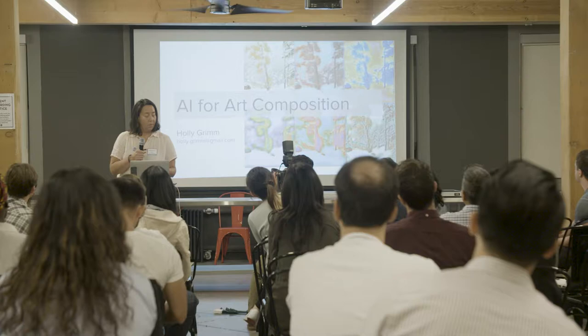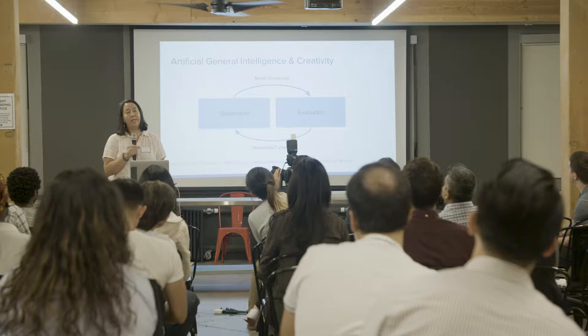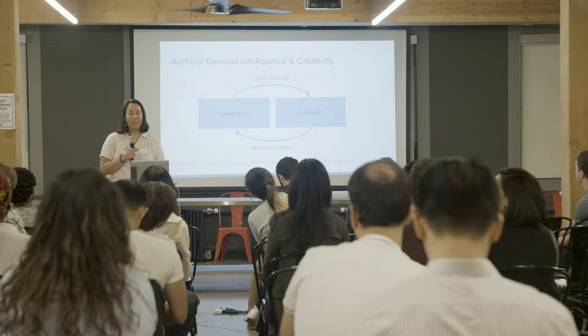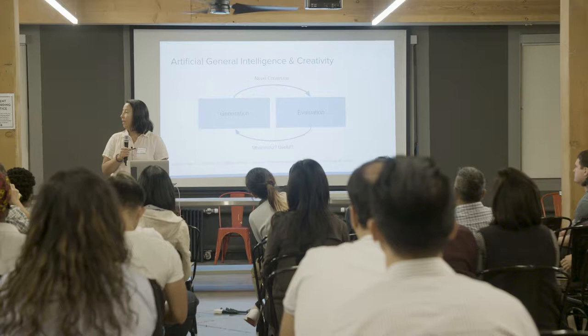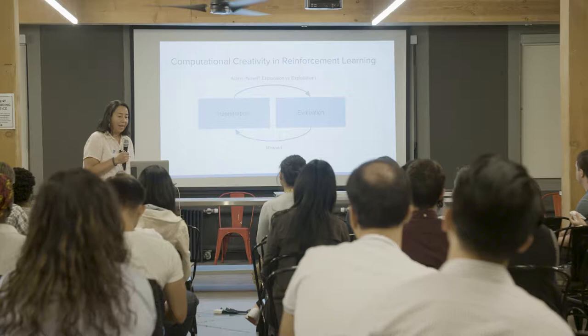Artificial intelligence and creativity — how does creativity fit into AGI? One definition of computational creativity is that it's a two-phase flow of generation and evaluation. First, novel constructs are generated, and then they are evaluated based on meaningfulness and usefulness. Here's a similar model in reinforcement learning where actions are generated and evaluated.